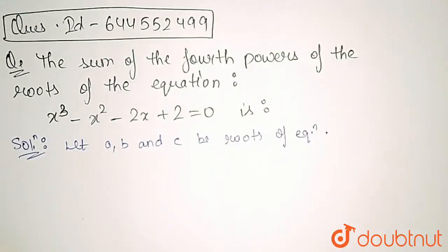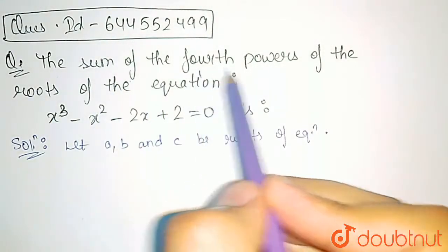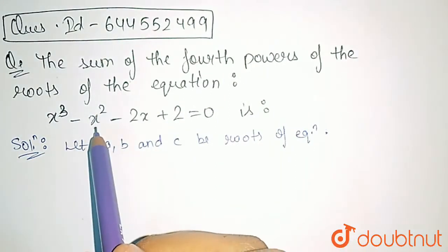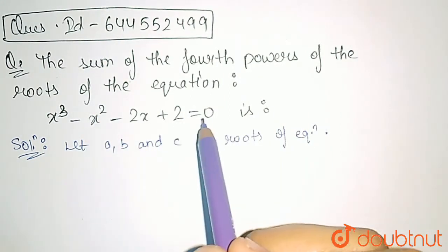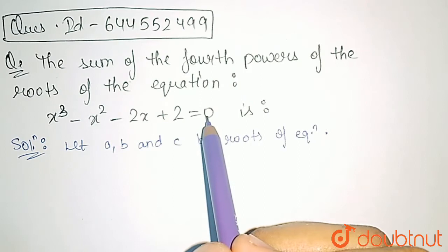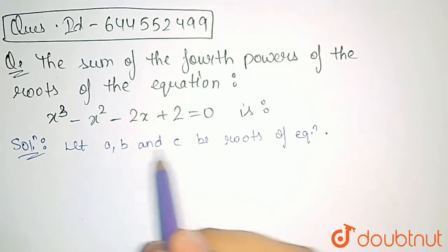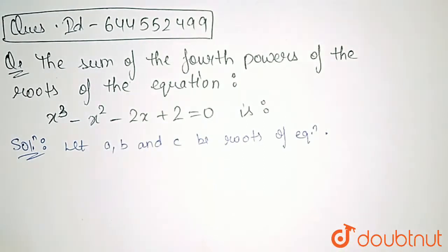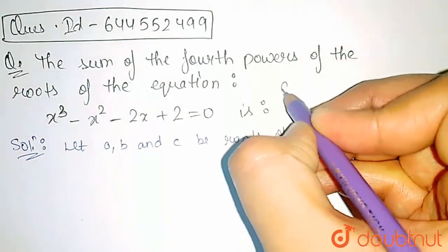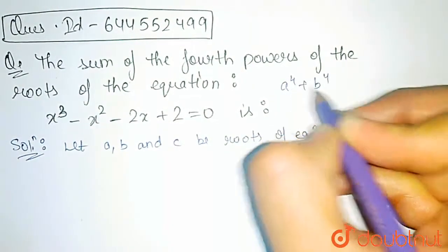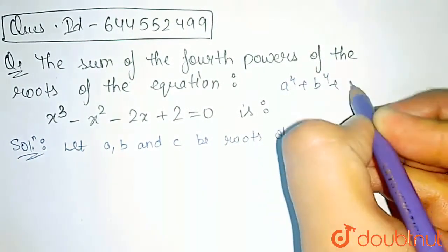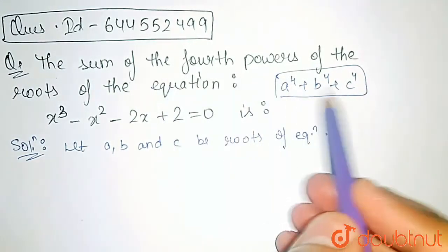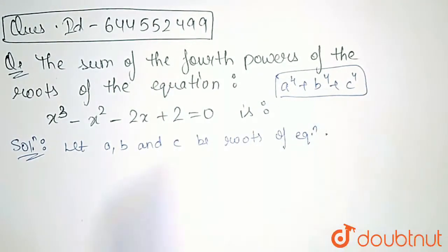In this question, we have to find the sum of fourth powers of the roots of the equation x cubed minus x squared minus 2x plus 2 is equal to 0. We assume that a, b, and c are the roots of this cubic equation. So we need to find a⁴ + b⁴ + c⁴.